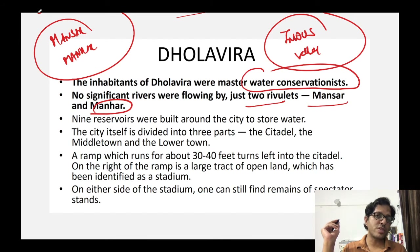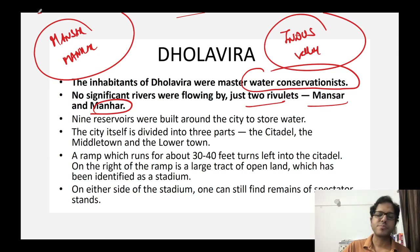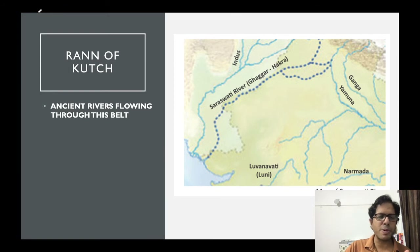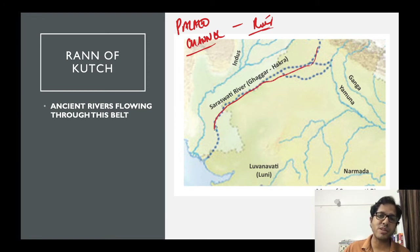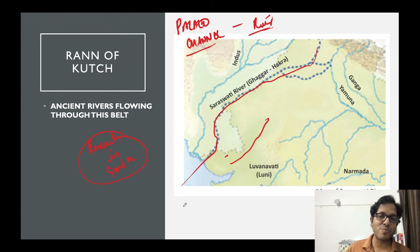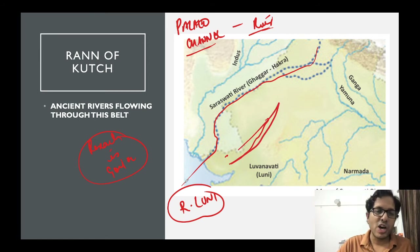Dholavira - KPSC question: which city of Indus Valley was focusing on water conservation? That is Dholavira. In Run of Kutch, ancient rivers - research is still going on. There was a river paleo channel (old channel) that has been lost. It is said that the Saraswati River was flowing through this belt. Research is still going on. At present, River Looni flows from Rajasthan and finds its way in this belt, ending in Greater Run of Kutch.